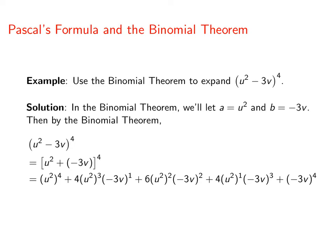Then, applying the binomial theorem gives us this expression. u squared to the fourth power plus 4u squared cubed times negative 3v to the first plus 4u squared squared times negative 3v squared plus 4u squared to the first times negative 3v to the third plus negative 3v to